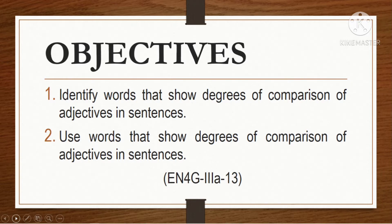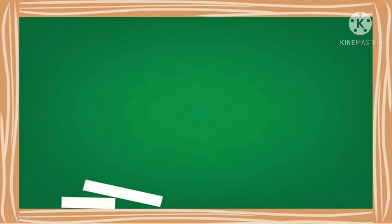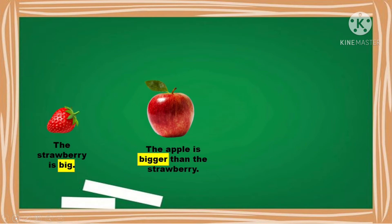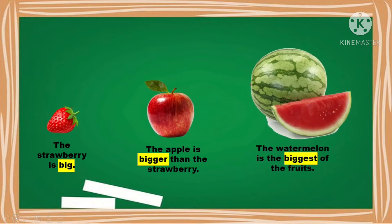What comes in your mind when you hear the word adjective? To begin with your exploration and learning, let's look at the picture and then read the sentences. The strawberry is big. The apple is bigger than the strawberry. The watermelon is the biggest of the fruits.